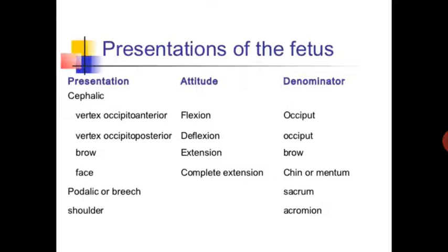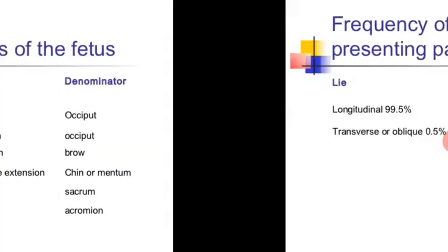Position is described as occipito-anterior or occipito-posterior. In face presentation, the attitude is complete extension and the denominator is the chin or mentum. In podalic or breech presentation the denominator is the sacrum, and in shoulder presentation it is the acromion.